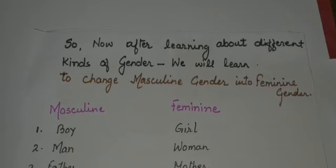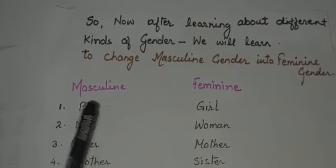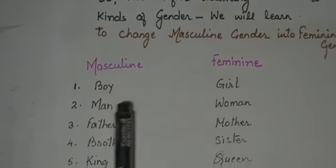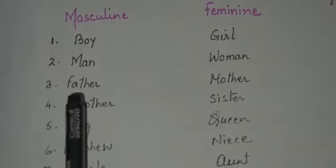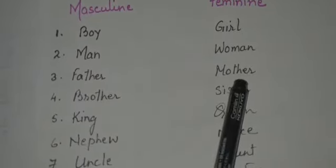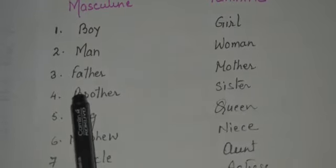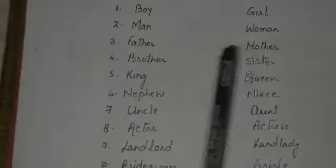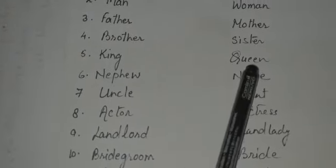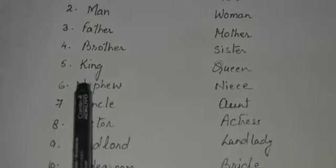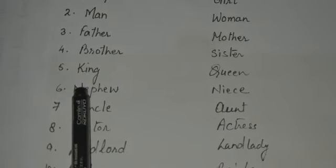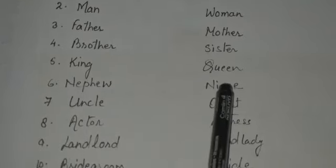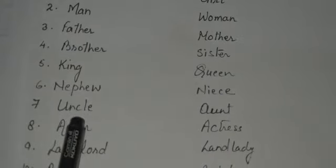As you can see in this paper: masculine gender is 'boy', feminine gender is 'girl'. Then 'man' is masculine, 'women' is feminine. 'Father' is masculine, 'mother' is feminine. 'Brother' is masculine, 'sister' is feminine. 'King' is masculine, 'queen' is feminine. 'Nephew' — your uncle's child, a boy — and 'niece' is a girl. 'Uncle' and its opposite is 'aunt'.